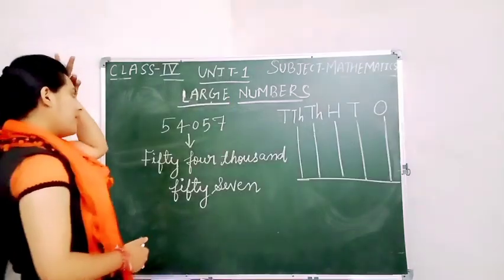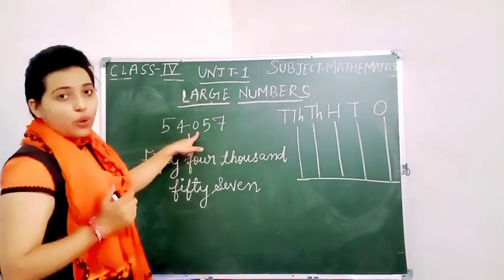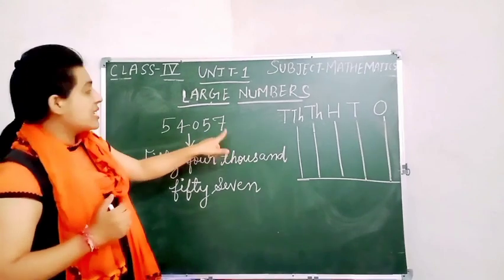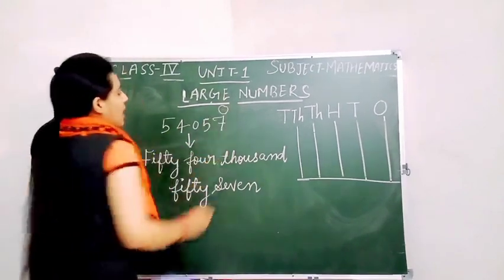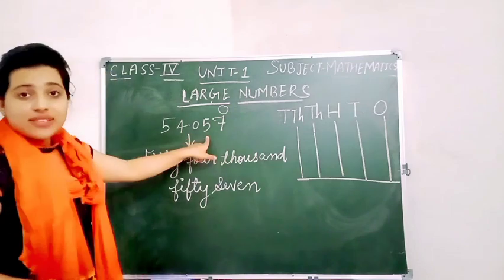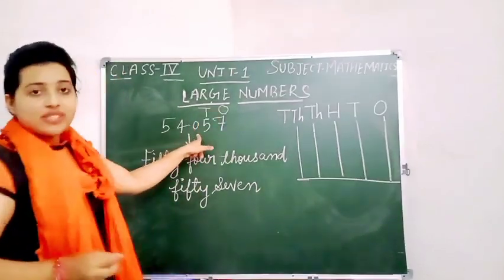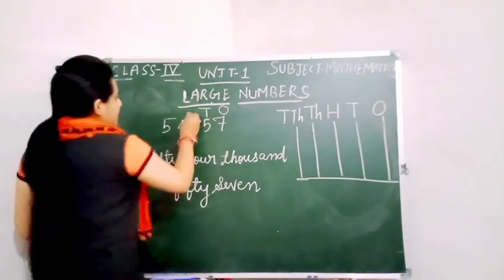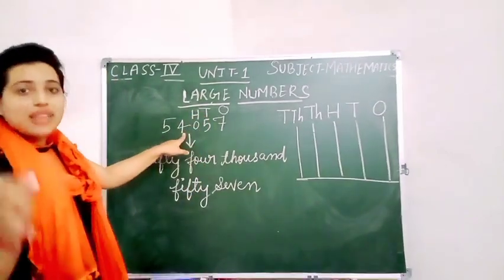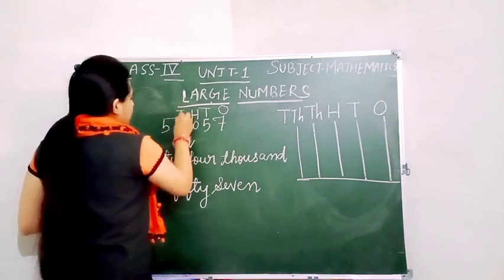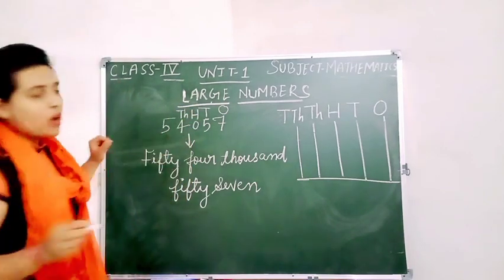Here we have the number 5, 4, 0, 5, 7. So 7 is in which place? 1's. And 5 is in which place? 10's. And 0 is in which place? 100's. And 4 is in which place? 1000's. And 5 is in which place? 10,000's.